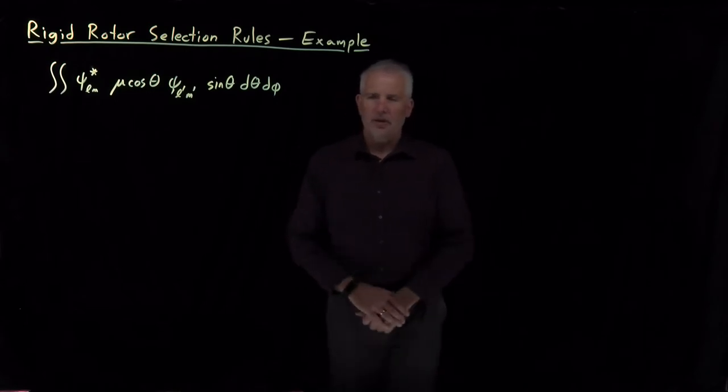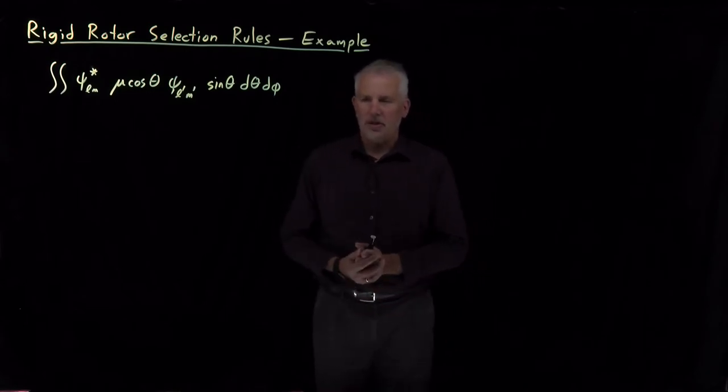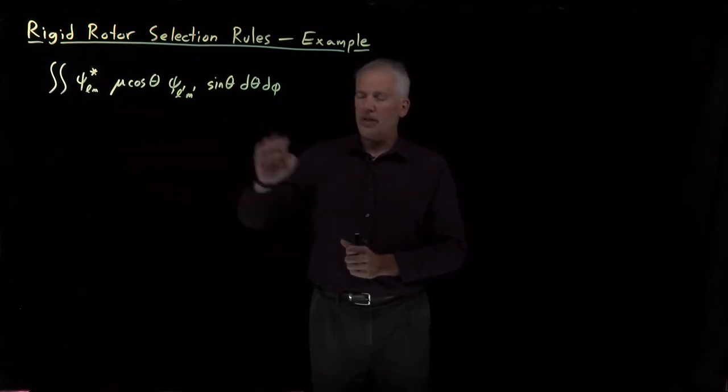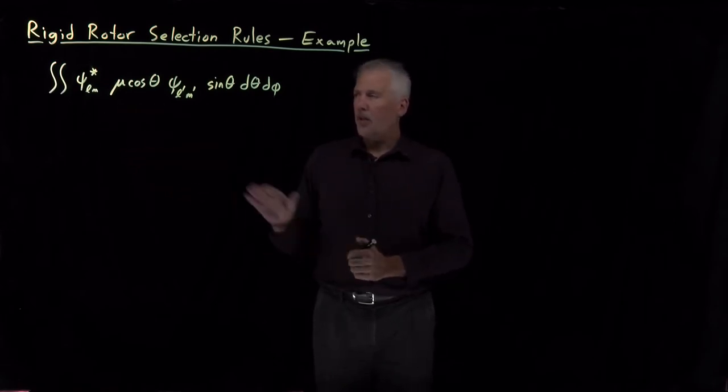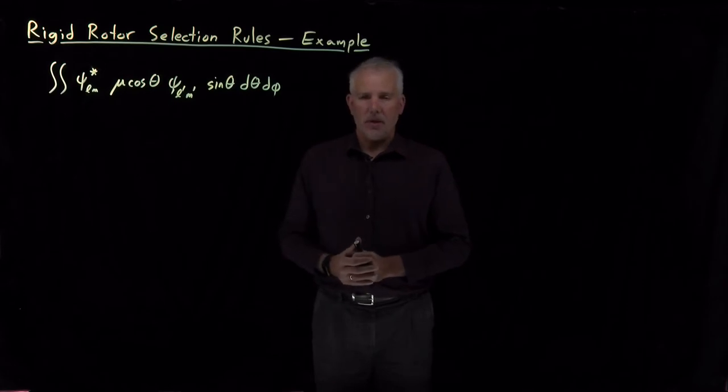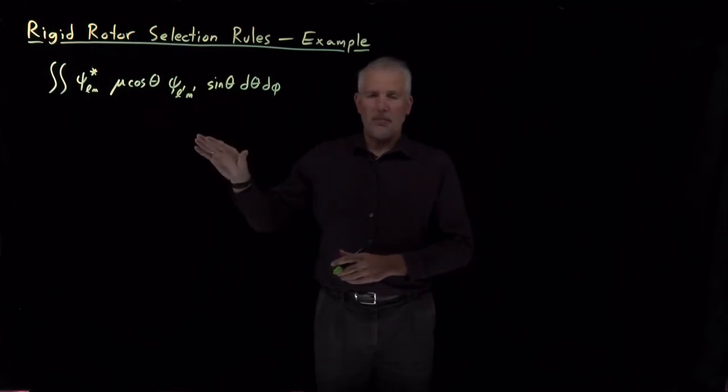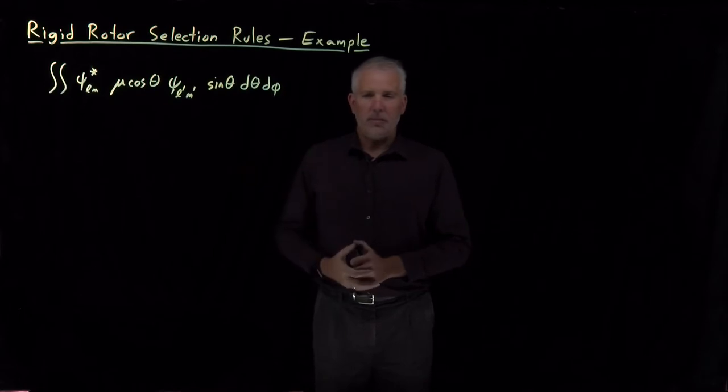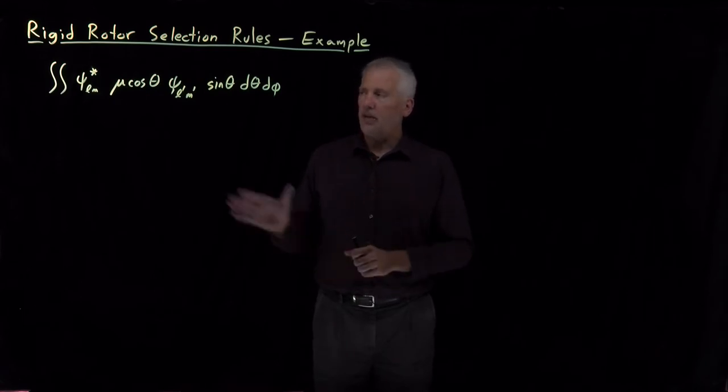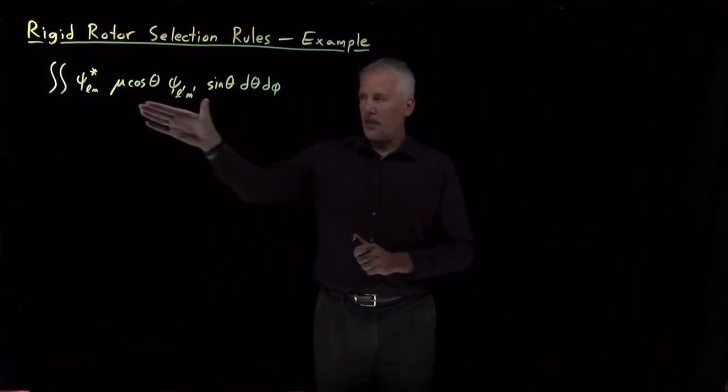Okay, so let's continue with this question of what makes a transition allowed or forbidden using this transition dipole moment. One feature of this expression that I didn't point out in the last video lecture is where this comes from. We haven't derived this expression. This comes from time-dependent quantum mechanics. If you remember the fifth postulate of quantum mechanics that explains the time dependence of the wave function, later on in the course we'll be able to derive this expression using time-dependent quantum mechanics. But we'll put that off for now and we'll just say that this expression is given to us.